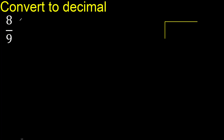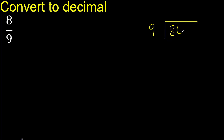8 divided by 9. 8 is less, therefore complete — always complete with 0.